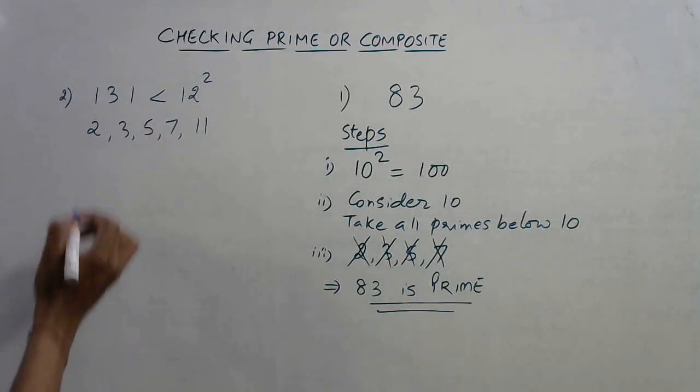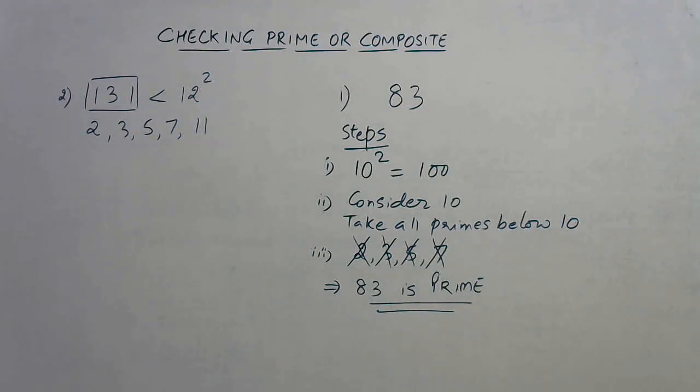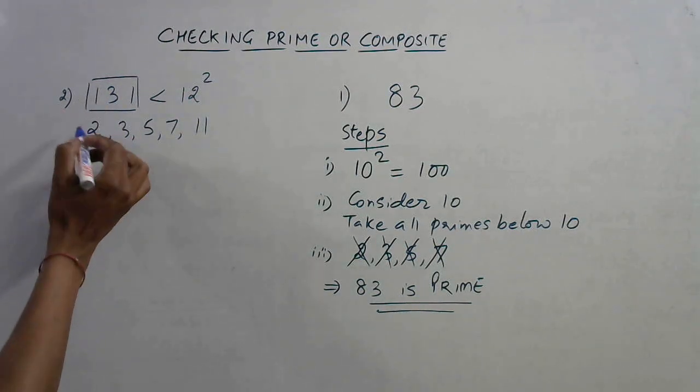Now just check whether this number 131 is divisible by any one of them or not. It's an odd number, so two ruled out.